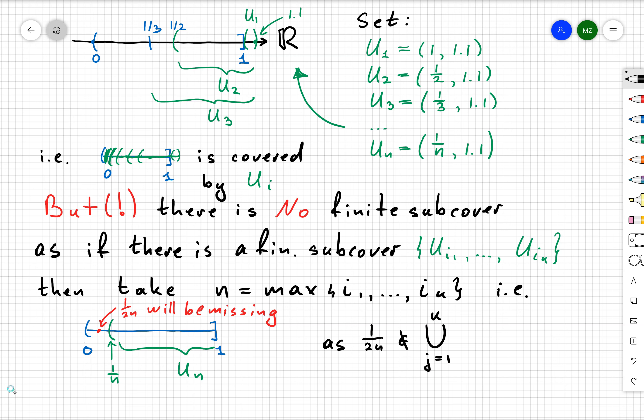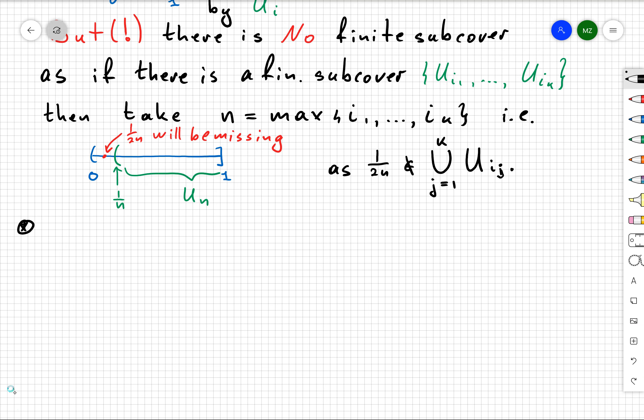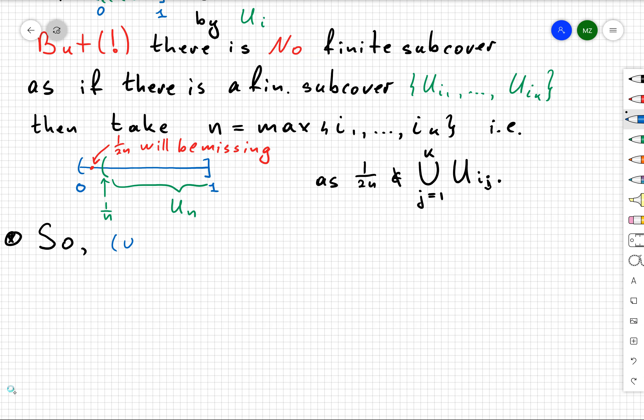And 1/(2n) is not going to belong to the union of all open sets. This is a contradiction since the union should equal our original half-open interval (0,1]. So it's not compact.